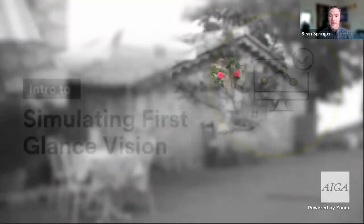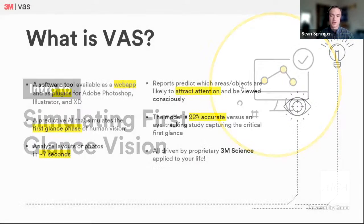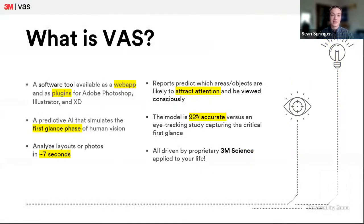VAS is software — a tool available both as a web app, which is fully optimized for mobile and works on all modern browsers except Internet Explorer, and as plugins for Adobe Photoshop, Illustrator, and XD. It's actual predictive AI that simulates this first-glance phase of vision, simulating that process of flitting about and taking all of those two-degree cuts.